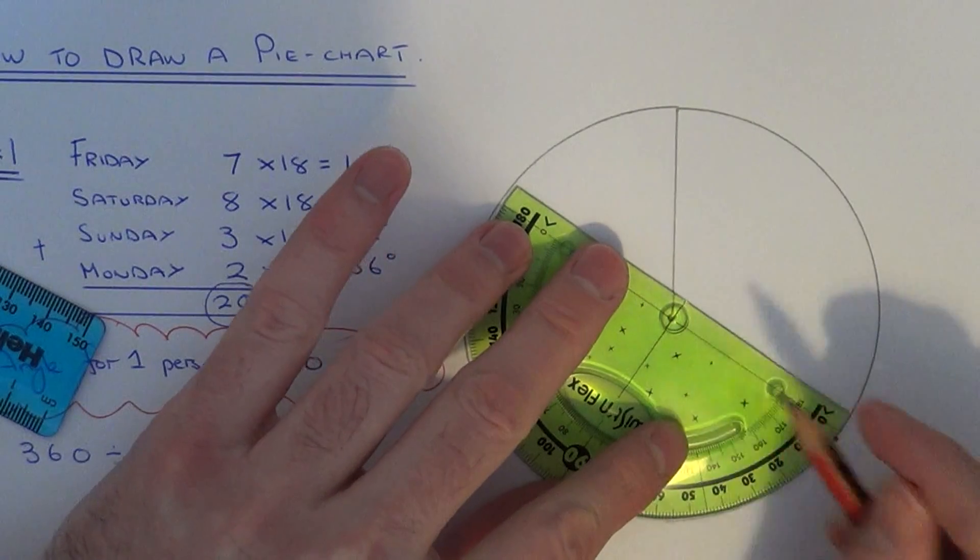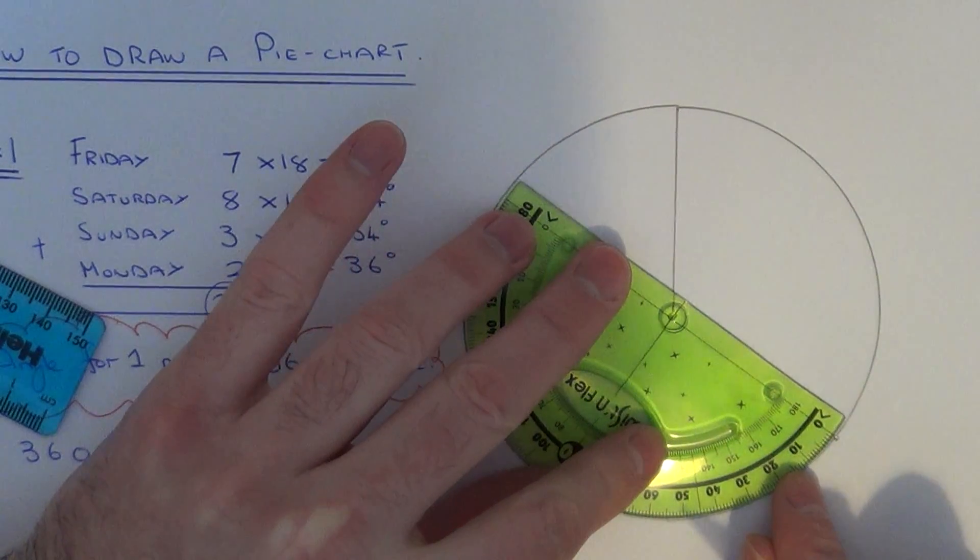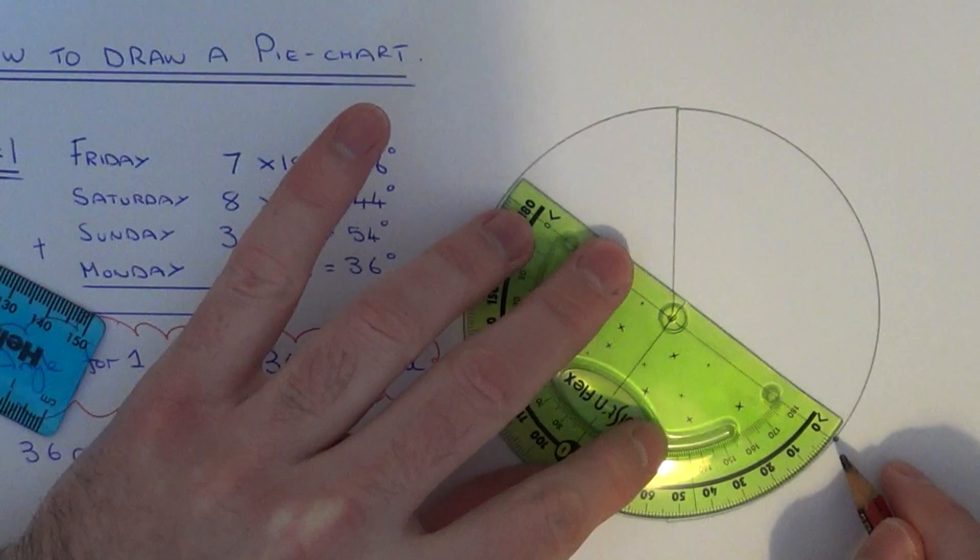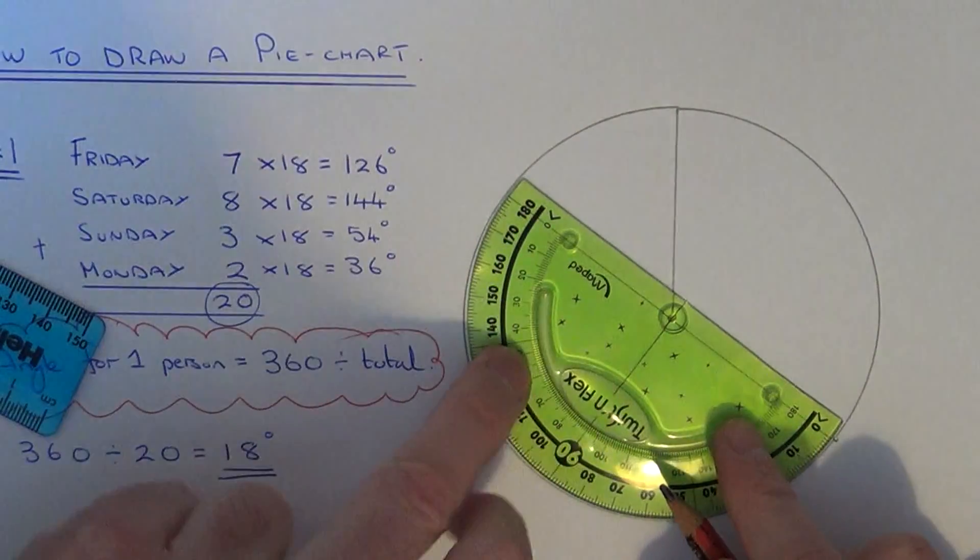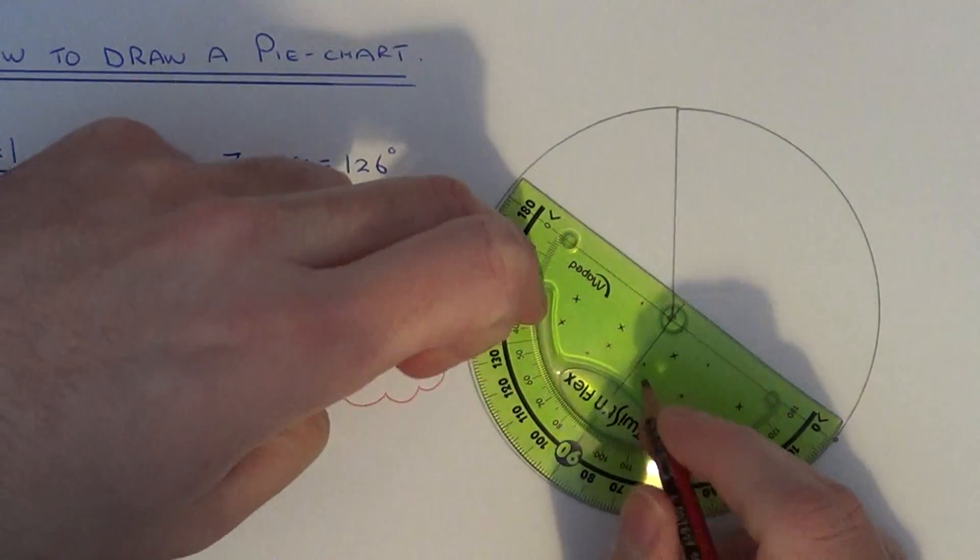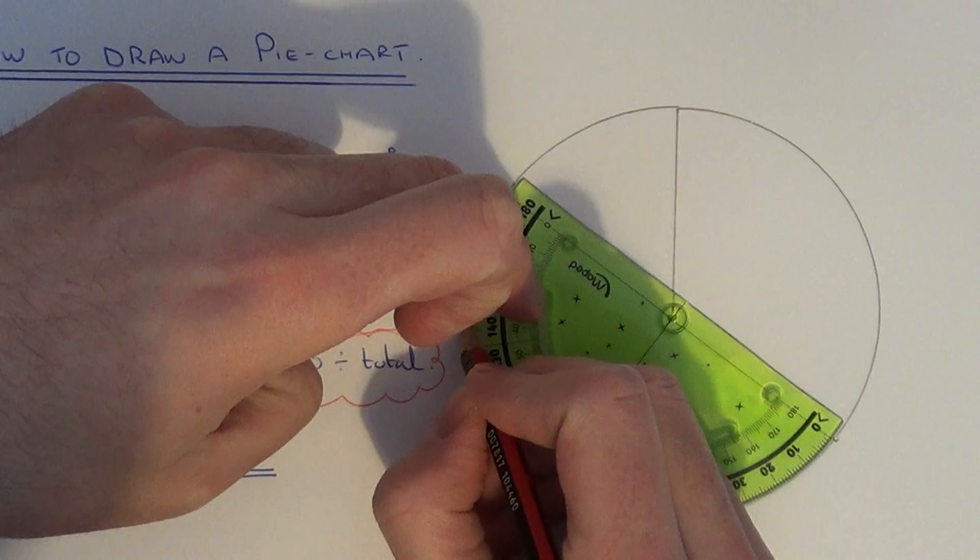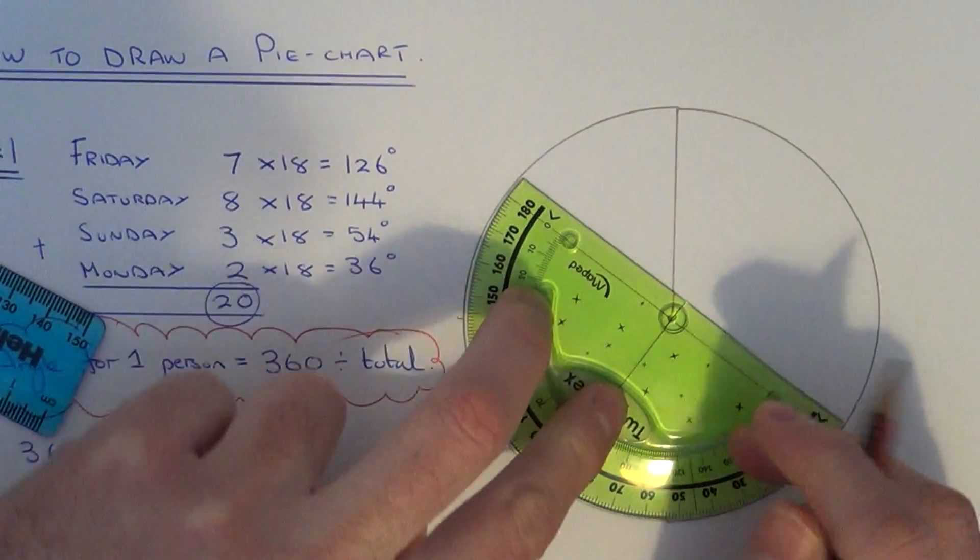So if we put our centre back on the centre, we'll get 0 on that little marker. So our next angle is 144. So again, just mark that one out.